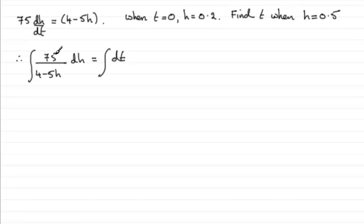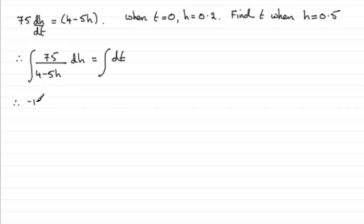All we need to do is integrate both sides of our equation. For something like this, it's a natural log type, because when I differentiate the denominator I get minus 5. Although I have to multiply minus 5 by minus 15 to get 75, it becomes a natural log type. We can rewrite this as minus 15 multiplied by minus 5 all over 4 minus 5h, integrated with respect to h.